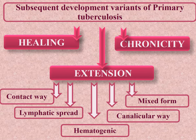Chronicity of the primary tuberculosis infection occurs due to insufficient resolution of the tuberculosis process in lymph nodes, with spreading to neighboring lymph nodes. Changes in immunological homeostasis cause alternation of remission and recidivation processes. Paraspecific reactions resembling rheumatism, Poncet's disease, are characteristic.